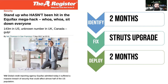Another example is the Equifax mega-hack, about two and a half years ago. The problem was a dependency — namely Struts, the Java framework — that wasn't updated. It took them two months to even identify they had a problem, and then two months to actually roll out an upgrade of their Struts dependency. I cannot argue that the damage would have been any less if deployment were faster, but I think we can speculate it probably would have been.